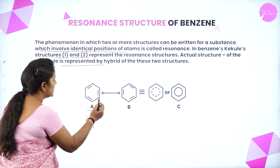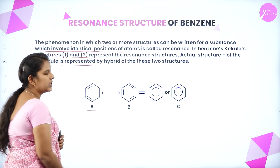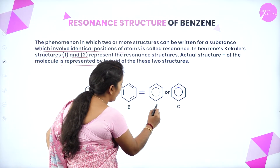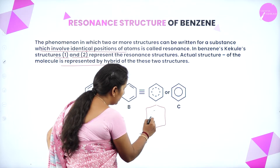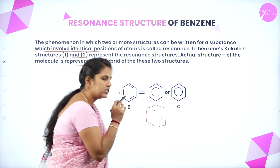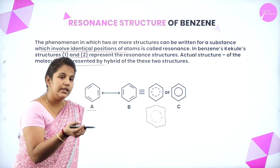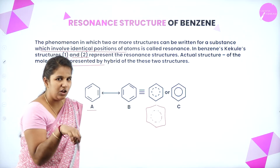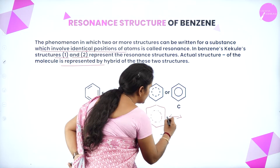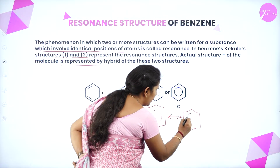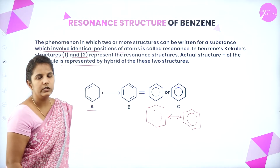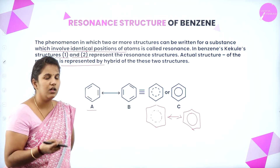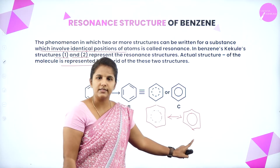Kekulé suggested we can write the benzene ring with alternating double and single bonds as structure 1 and structure 2. We can also write the hybrid structure using dotted lines, which indicates that the single and double bonds — the pi electrons — have started delocalizing. Once delocalized, we can write the benzene ring with a circle inside, representing the resonance hybrid structure of benzene.